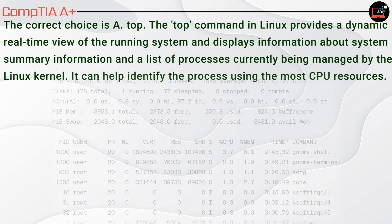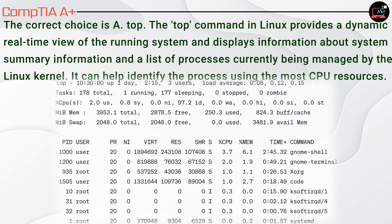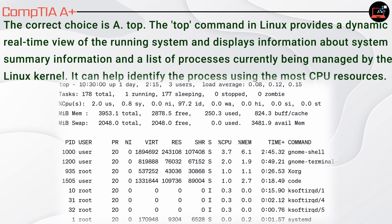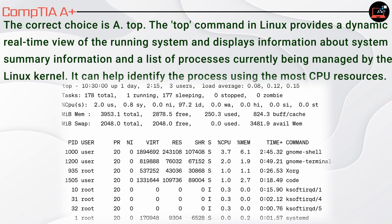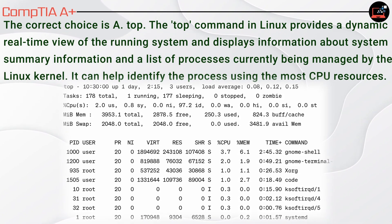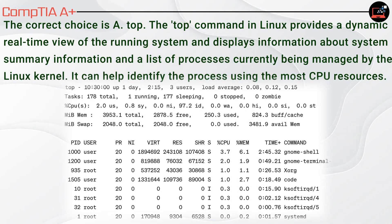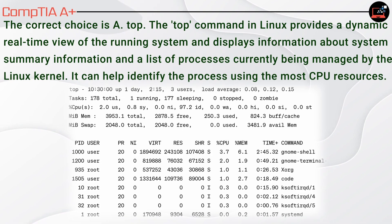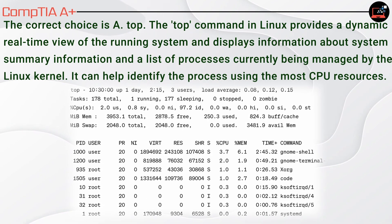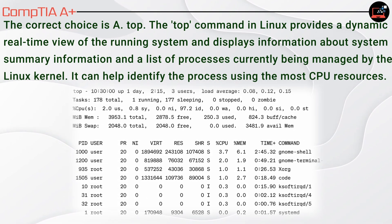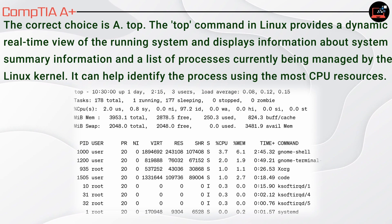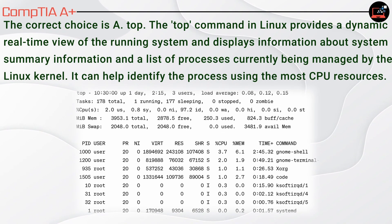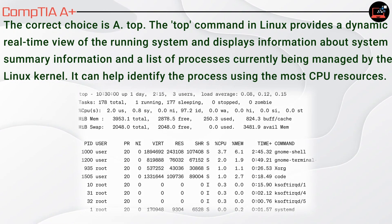The correct choice is A. atop. The top command in Linux provides a dynamic real-time view of the running system and displays information about system summary information and a list of processes currently being managed by the Linux kernel. It can help identify the process using the most CPU resources.